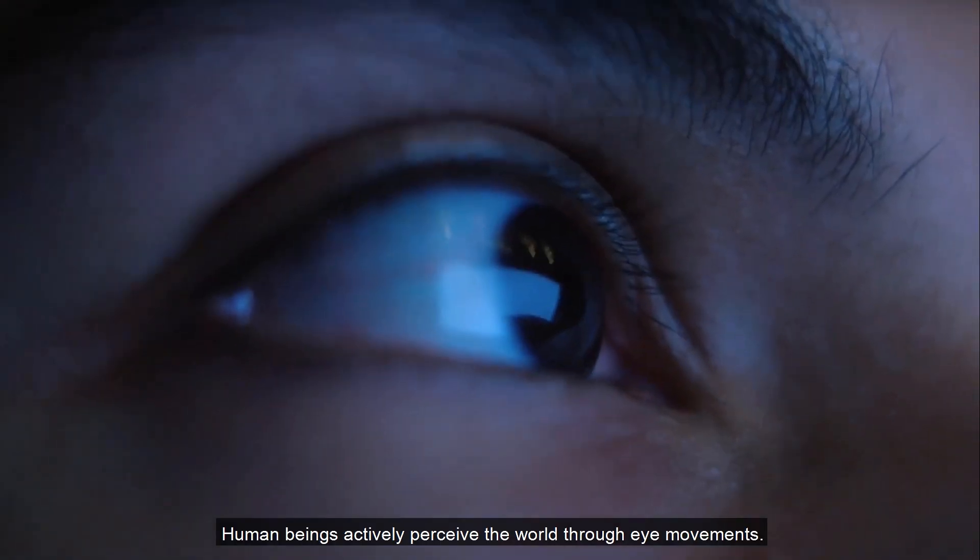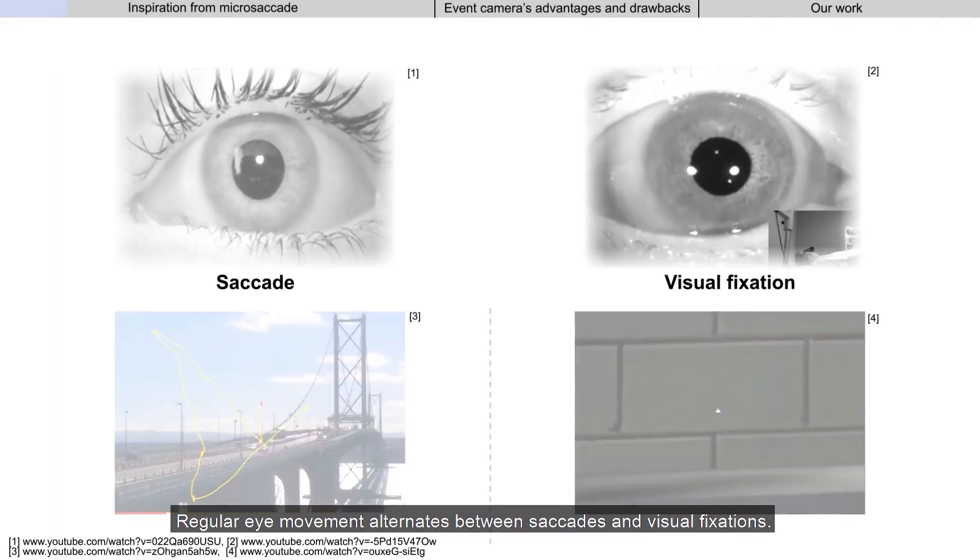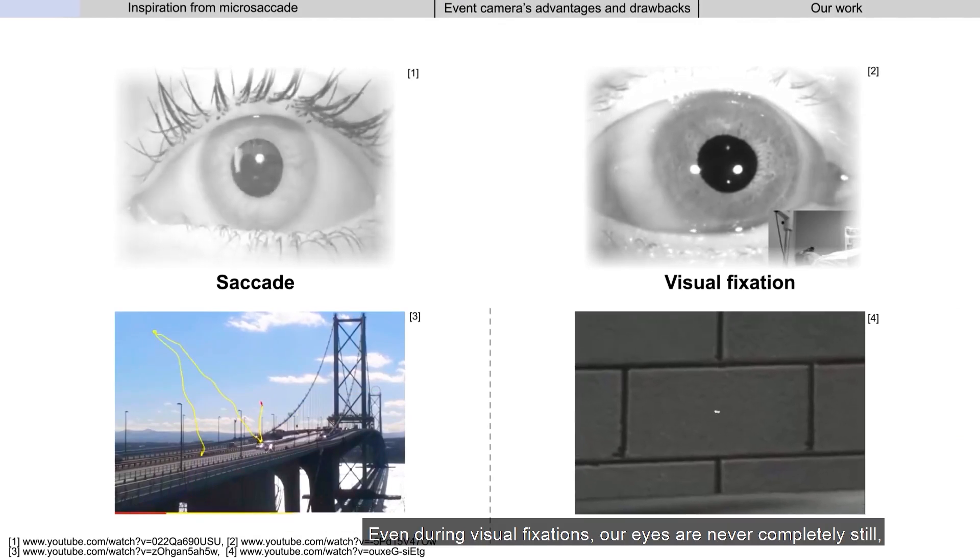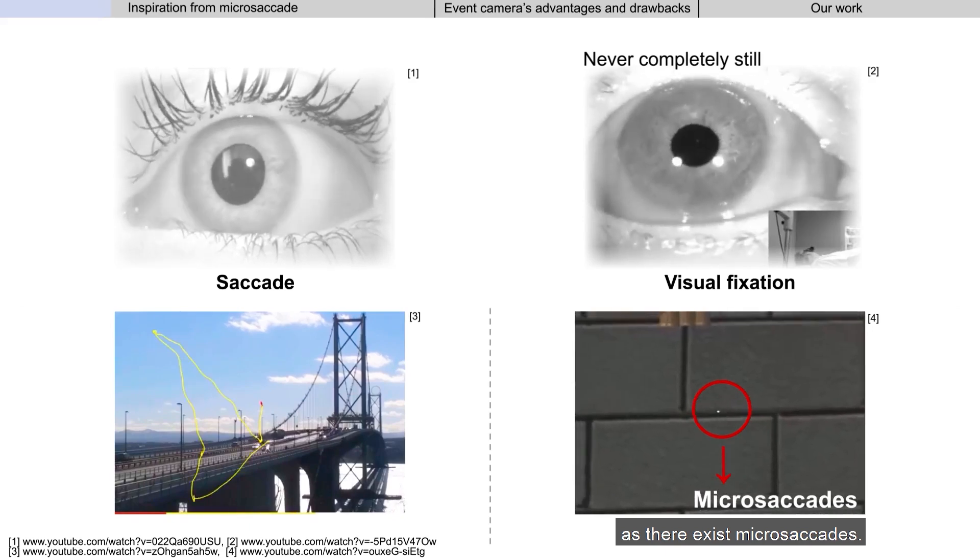Human beings actively perceive the world through eye movements. Regular eye movement alternates between saccades and visual fixations. Even during visual fixations, our eyes are never completely still, as there exist microsaccades.